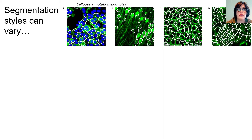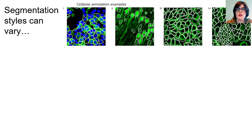Can we really achieve the best generalist model with more data? Maybe not, because segmentation styles can vary depending on the dataset. In CellPose, we often segment cells that have cytoplasm, not just nuclei. We also have examples where we didn't circle processes, particularly if they were very long or ambiguous, and we really tried to segment as much of the cytoplasm as possible even in ambiguous cases.